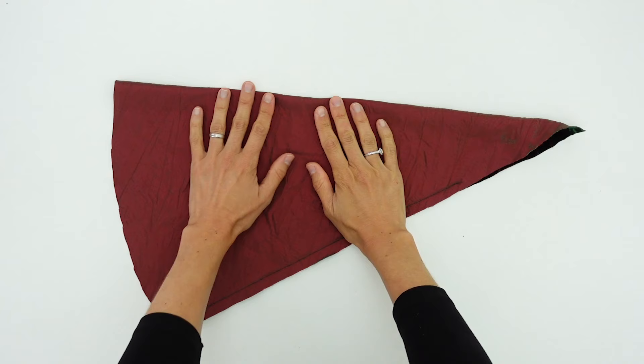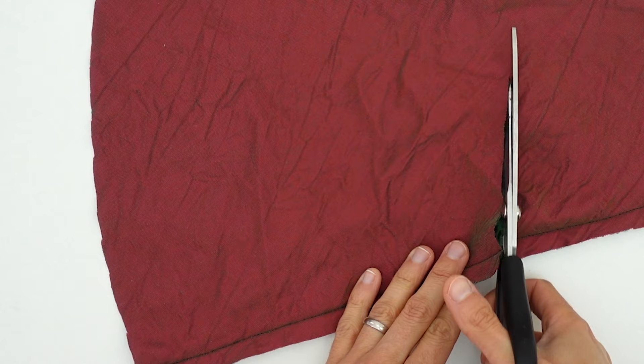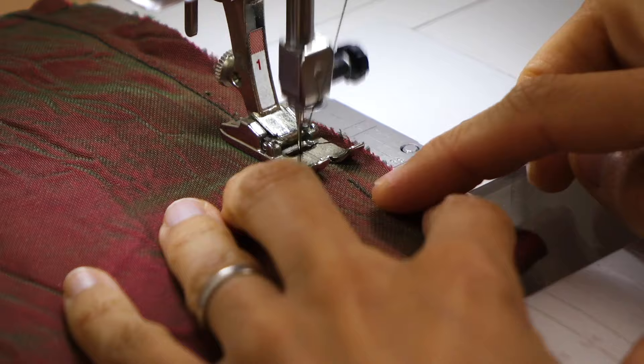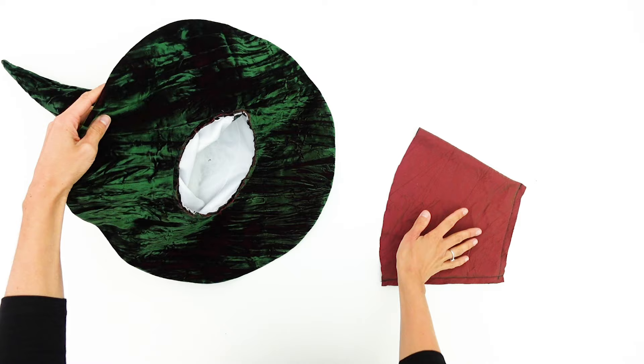Fold your piece right sides together, stitch it at 1cm, then try the lining on, on your head to check where you could cut it to have a small fitted little cap instead of a big pointy hat. We can now stitch this little cap at 1cm from the edge and insert it inside the hat wrong sides together.